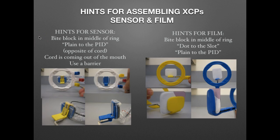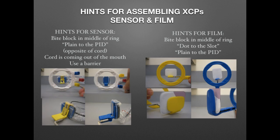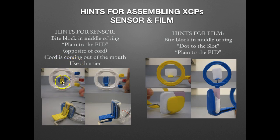Here are a few hints for assembling your XCP to ensure diagnostic quality images. For the sensor, make sure the bite block is in the middle of the ring once you assemble the bite block and ring onto the rod, and confirm you can see your sensor centered in the ring for both posterior and anterior. Make sure the flat side of the sensor faces the PID — that is the opposite side from the cord — and ensure the cord exits the patient's mouth properly. Use a barrier on your sensor for infection control.